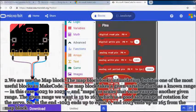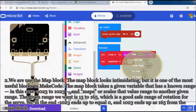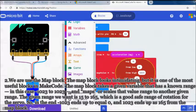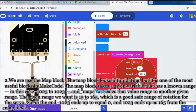Second, we use the map block. The map block looks intimidating, but it is one of the most useful blocks in MakeCode. The map block takes a given variable that has a known range—in this case, minus 1023 to 1023—